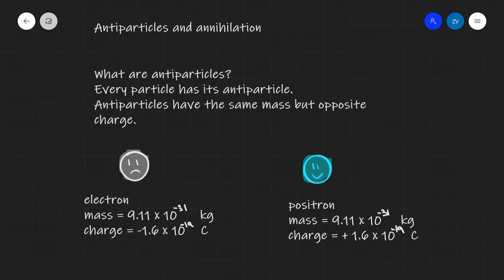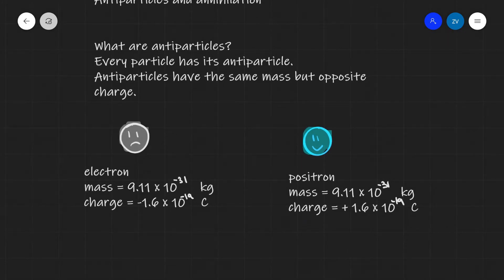For instance, we have the electron, which is our regular particle, and that has a mass of 9.11 times 10 to the power of minus 31 kg, and a charge of negative 1.6 times 10 to the power of minus 19.